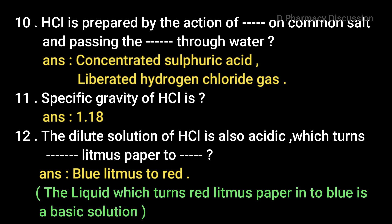Next question: the dilute solution of HCl is acidic, which turns blue litmus paper to red. Solutions which turn blue litmus paper to red are acidic in nature, solutions which turn red litmus paper to blue are basic in nature, and solutions which don't affect the color of litmus paper are water.